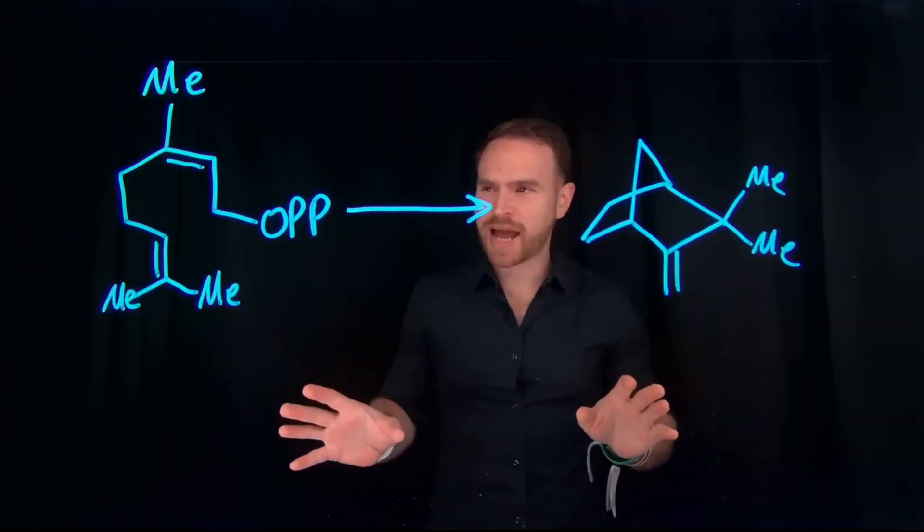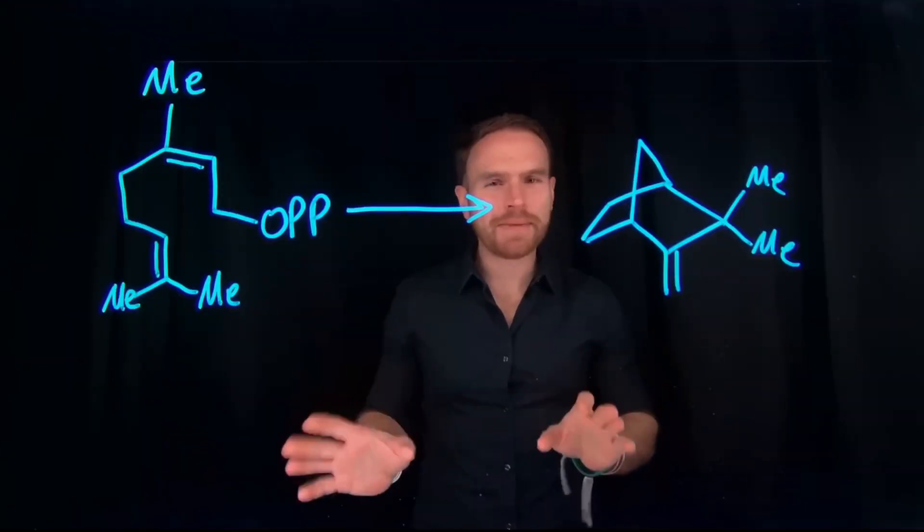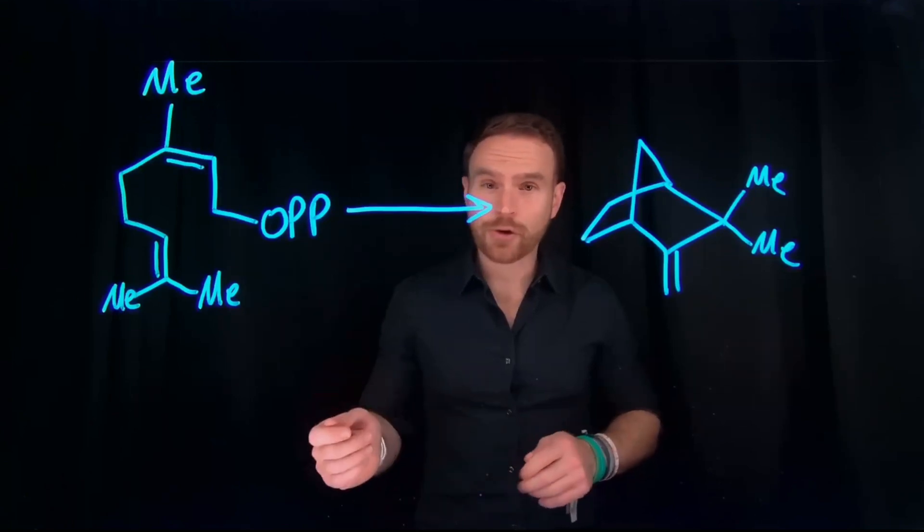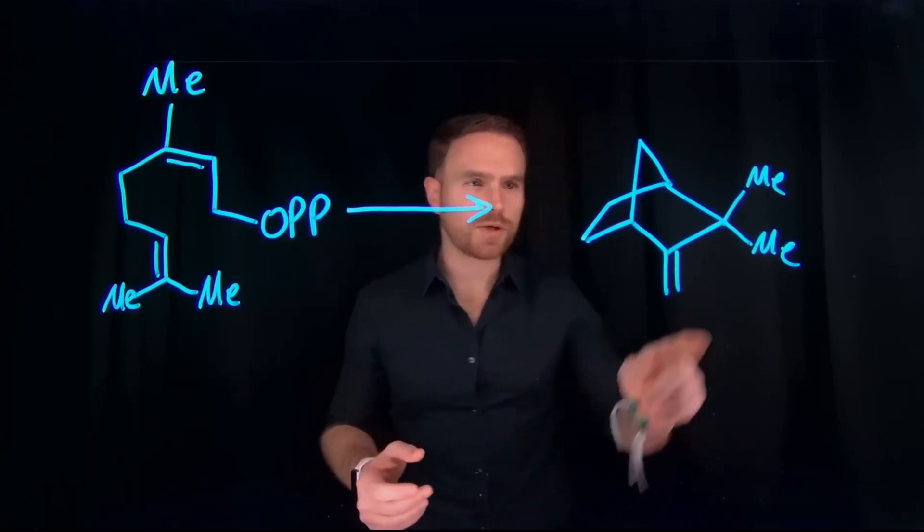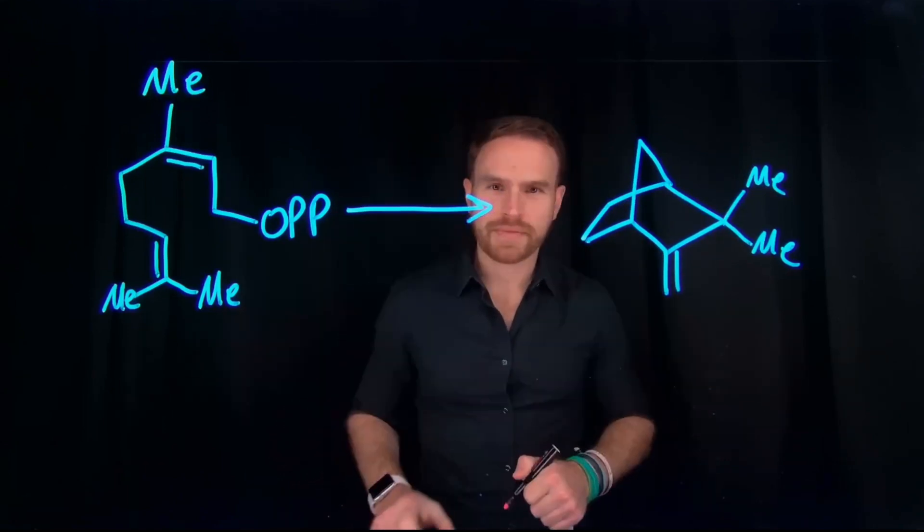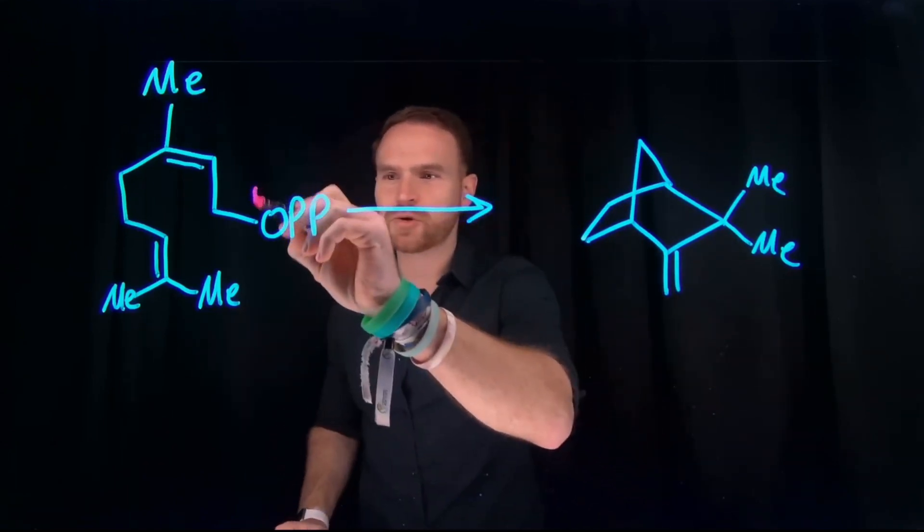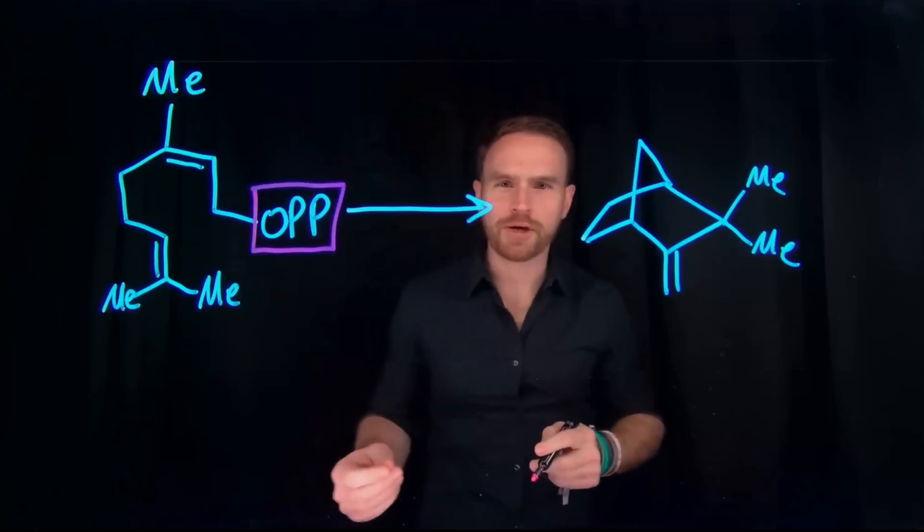This is a fascinating reaction that contains some chemistry that you maybe have never seen before. It involves what's known as a Wagner-Mierwein rearrangement, which is a fundamental process in nature in which we develop what are called terpenes. And what's more, is it contains this group here, written as OPP, that maybe you're unfamiliar with.